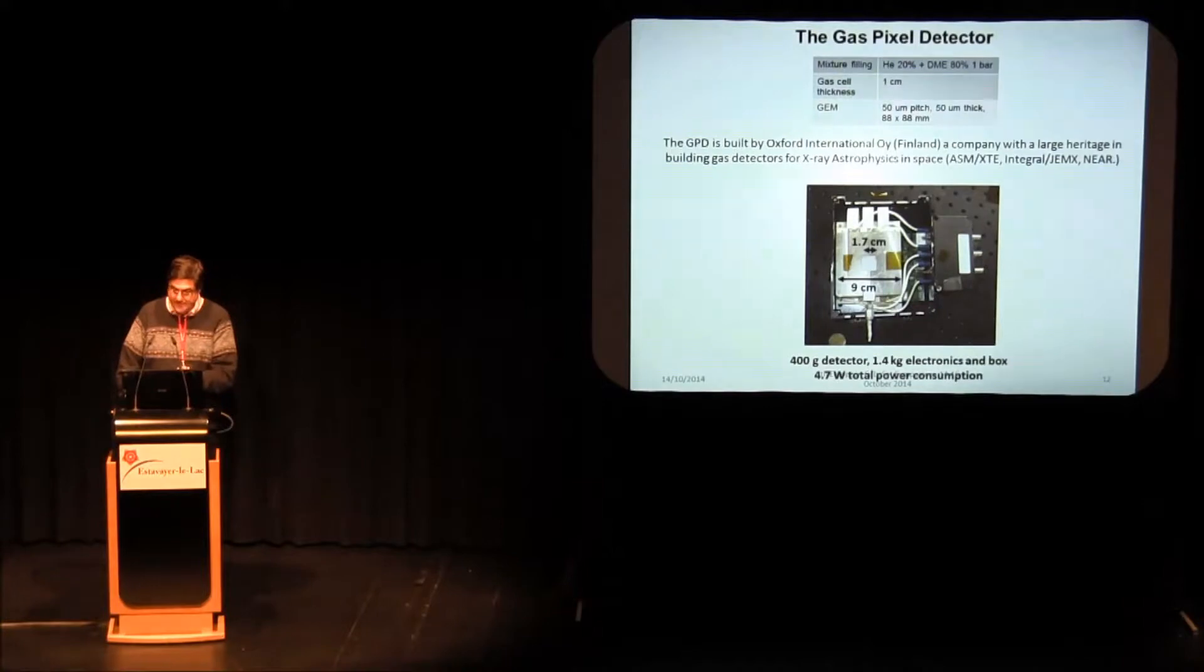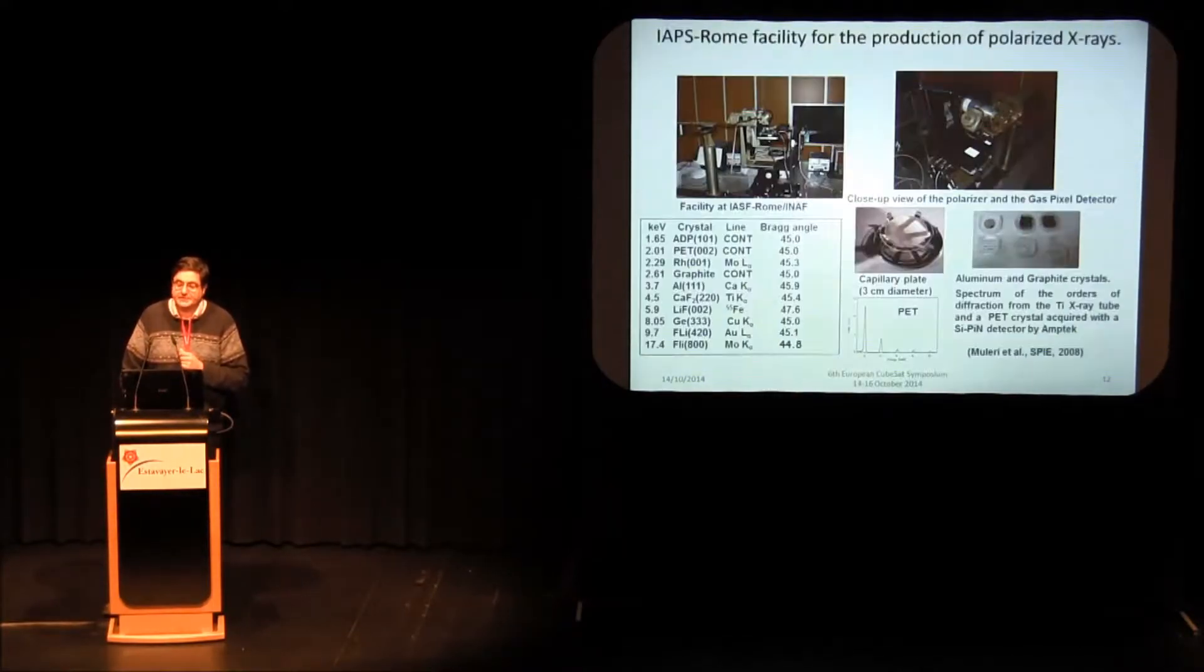This is the polarimeter that was built by BNL and Leicester that has a large heritage building gas detectors for X-ray astrophysics. It has a width of 9 cm, a window of 1.7 cm, this is a beryllium window. Behind this aluminum frame there is a MicroMegas spacer and below this you see here the laboratory electronics. This is a detector filled with low atomic number gas mixture that is helium 20% and DME 80%.